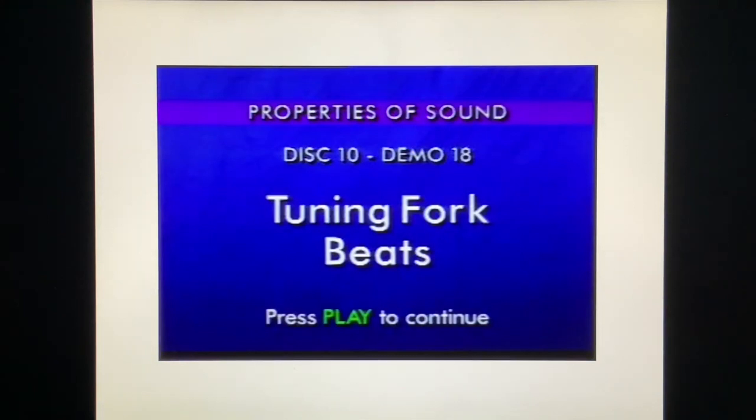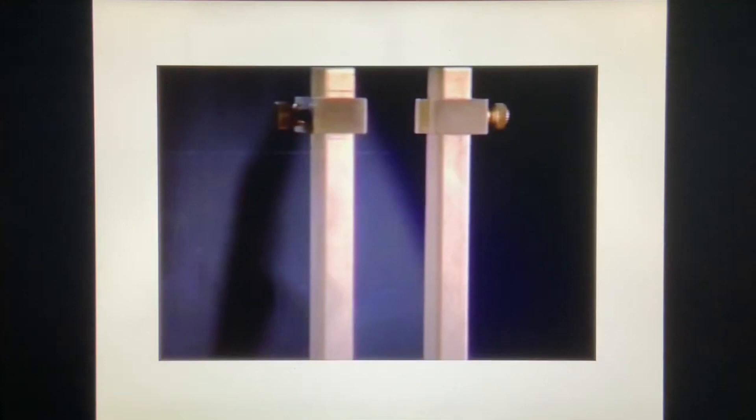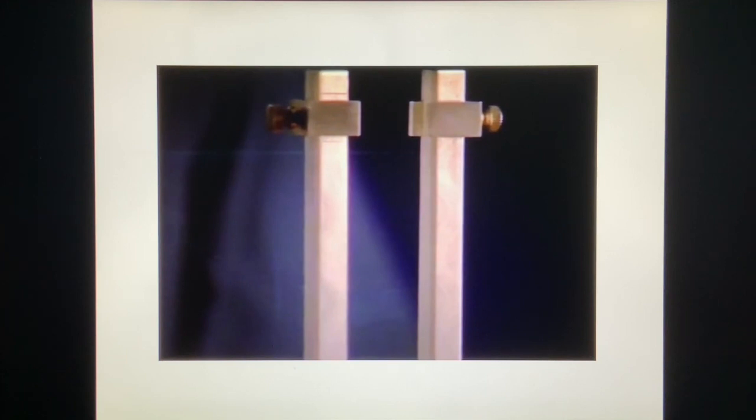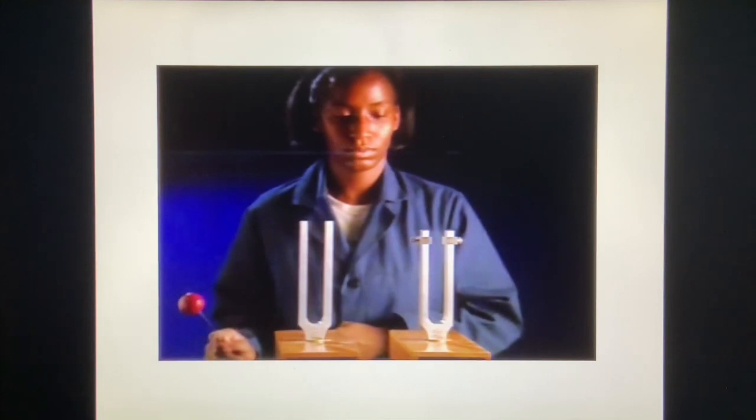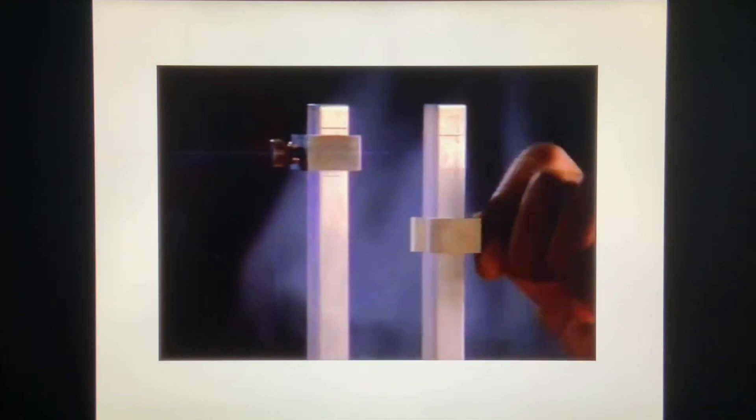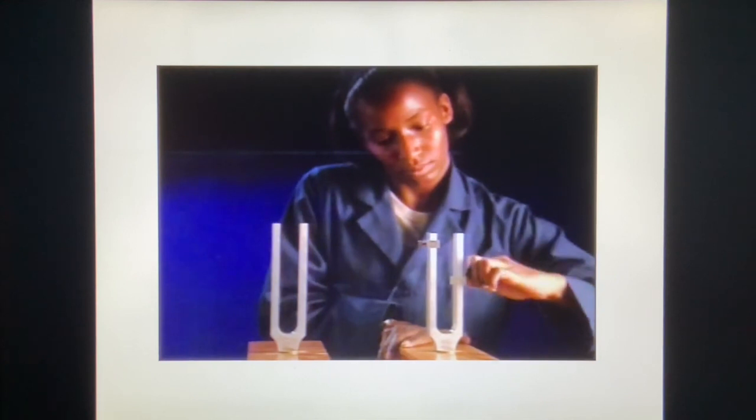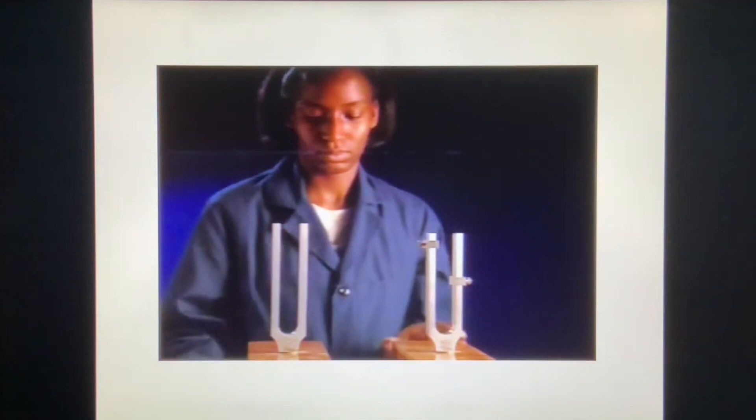These two tuning forks have frequencies of oscillation that are very close together. The frequency of one of the forks can be adjusted by sliding these weights up and down the tines or arms of the fork. Here is the sound produced when the two forks are set at nearly identical frequencies. Now we'll raise the frequency of this fork slightly and repeat the demonstration. Notice the variations in sound intensity or beats. When the difference in frequency is increased, the beats occur more rapidly.